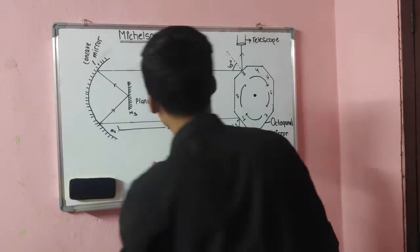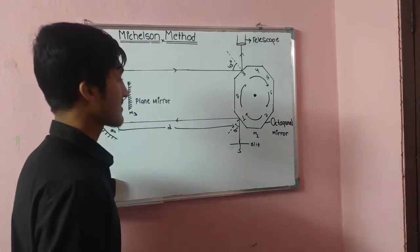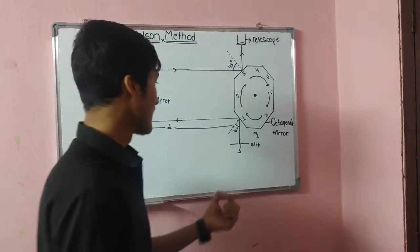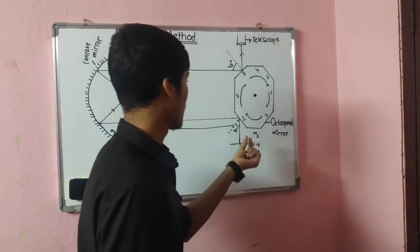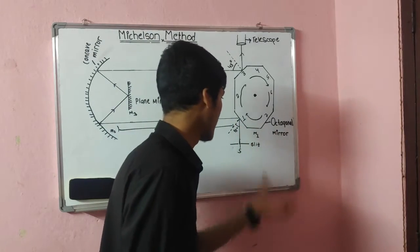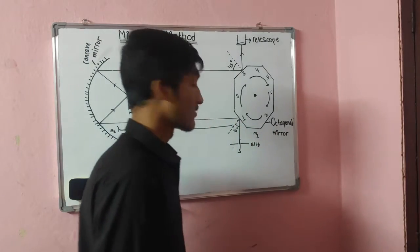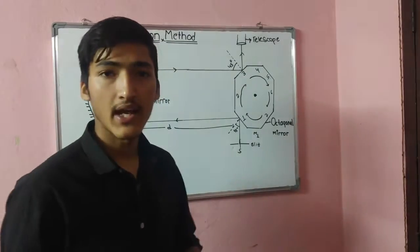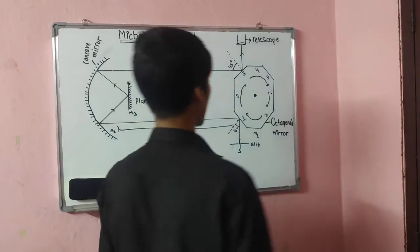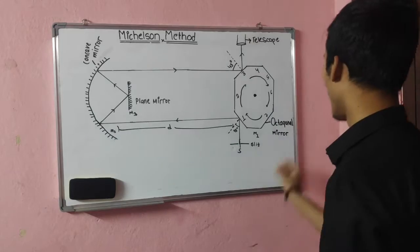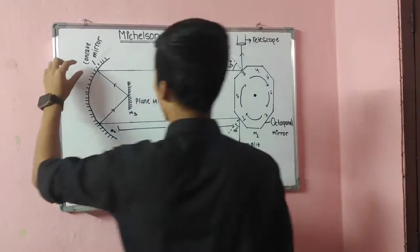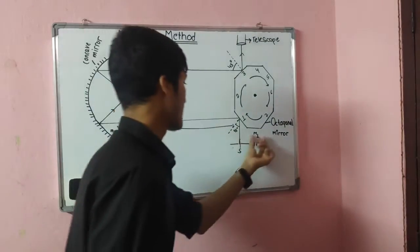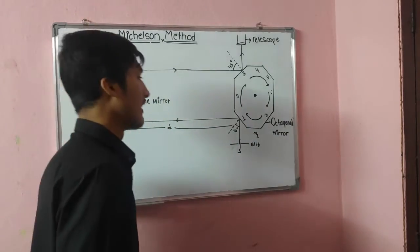The experimental arrangement consists of an intense source S, from which the light is allowed to fall on one face of the octagonal mirror so that reflection takes place and the further process can be carried out. It consists of three mirrors: one octagonal mirror, one concave mirror, and one plane mirror, named M1, M2, and M3.